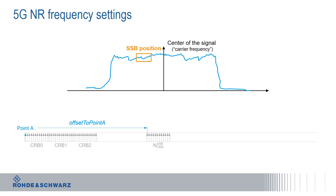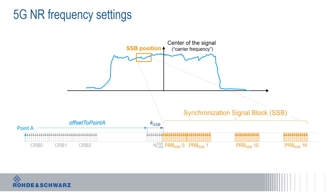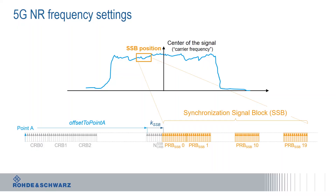Typically certain information is signaled to the device, for instance the offset to Point A. Since the synchronization signal blocks can actually utilize a different sub-carrier spacing than the data and control channels — for instance in the FR2 frequency range they could utilize 240 kHz for the synchronization signal blocks but 120 kHz for the data and control channels — we need to define an additional offset from that common resource block, and that is the parameter K_SSB that you see here in our graph, which I mark here for you.